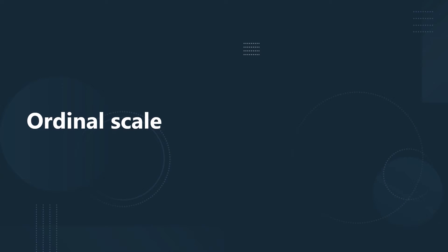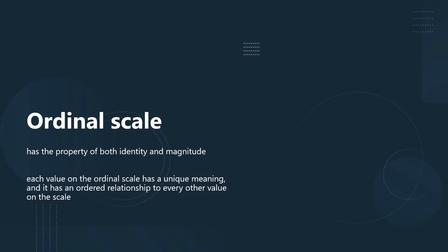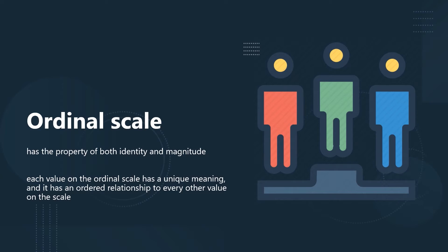The second level of measurement is the ordinal scale. The ordinal scale has the property of both identity and magnitude. Each value on the ordinal scale has a unique meaning, and it has an ordered relationship to every other value on the scale. The honors rank that assigns each student a number — first honor, second honor, and so on — is measured through the ordinal scale. Here, we only know who obtained greater marks compared to whom, but we do not know by how much, nor do we know the actual marks obtained by anyone. Variables whose data are measured as high, medium, or low are considered ordinal since they have both identity and magnitude only.